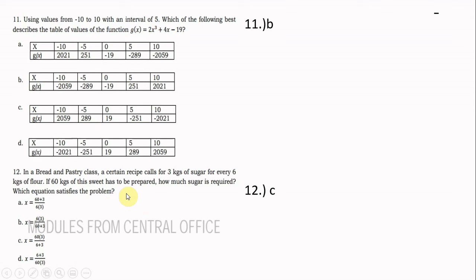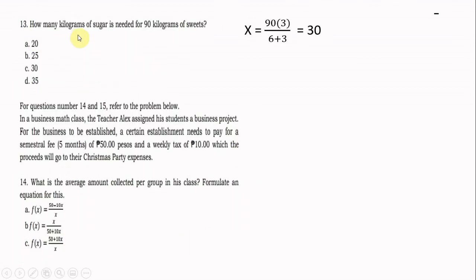Number 12: in a bread and pastry class, a recipe calls for 3 kilograms of sugar for every 6 kilograms of flour. If 60 kilograms of sweets must be prepared, which equation satisfies the problem? The answer is letter C: x = 60 times 3 over (6 plus 3). For number 13, using the same formula for 90 kilograms of sweets: 90 times 3 divided by 9 equals 30 kilograms. The answer is letter C.